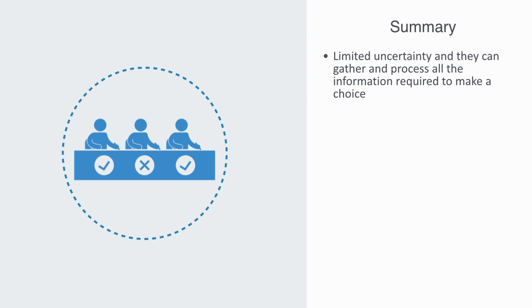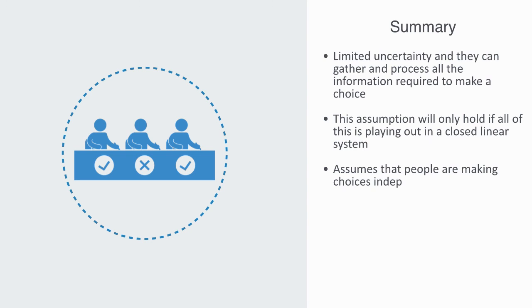People are basing their decisions, on information about their environment, and the future state to that environment. This model, is assuming, that the information about the future, is in fact knowable. And as we've discussed, this assumption, will only really hold, if all this is playing out, in a closed linear system. It also assumes, that people, are making choices independently. That in the absence of getting all this information, and processing it all, their inaccurate choices, will be randomly selected. This whole model, is clearly dependent, upon additivity.